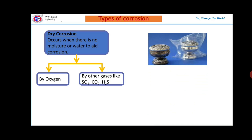Dry corrosion mainly occurs through the direct chemical action of atmospheric gases such as oxygen, halogens or hydrogen sulphide or sulphur dioxide or NOx.